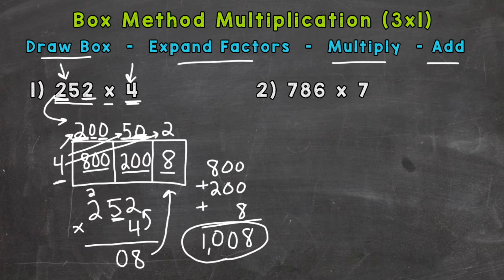And lastly, we do 4 times 2, this 2 here, but really it's 4 times 200, just like we did in the box method. So 4 times 2 is 8, plus that 2 is 10. So we get the same answer, 1008.